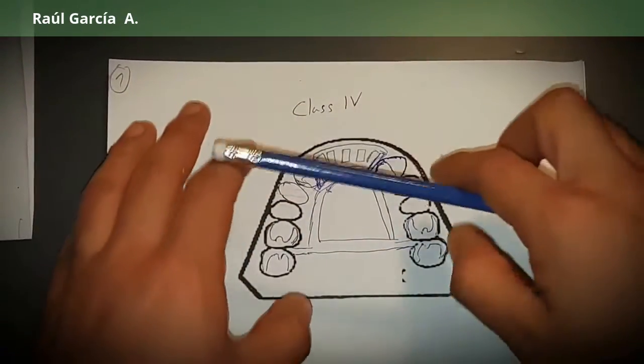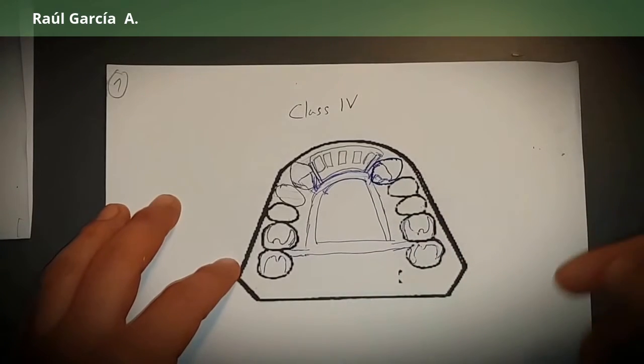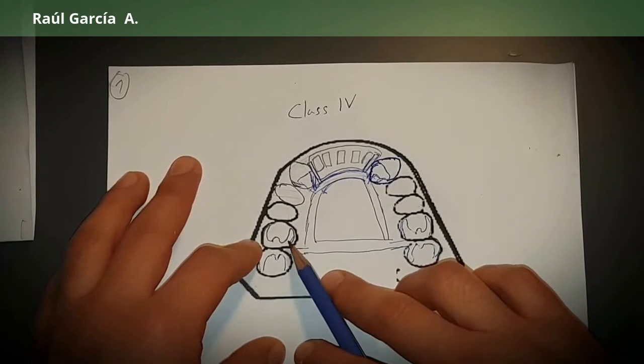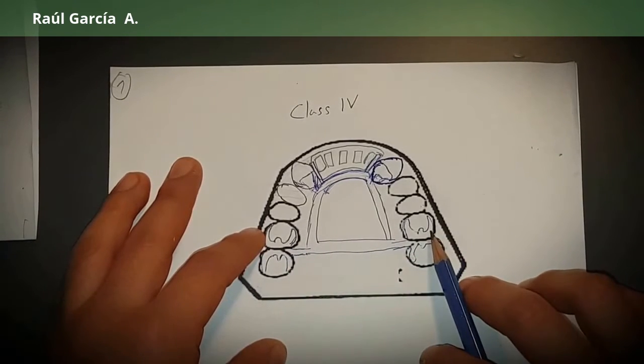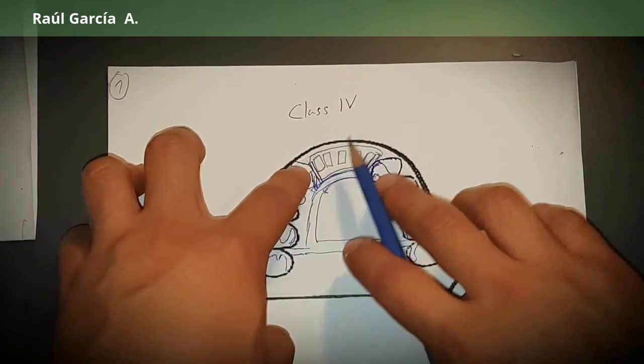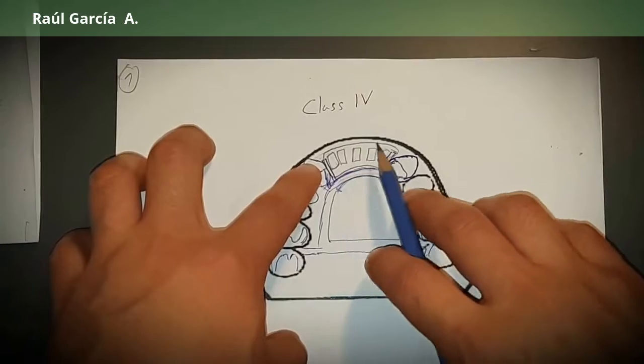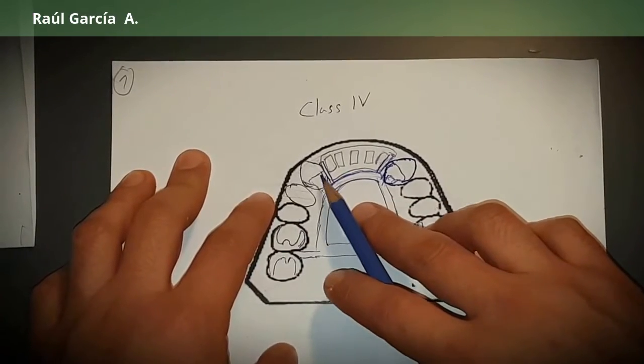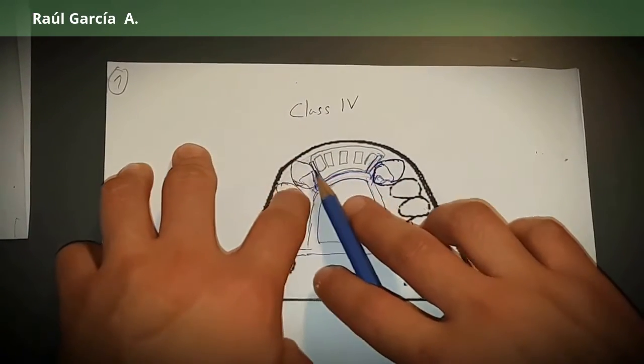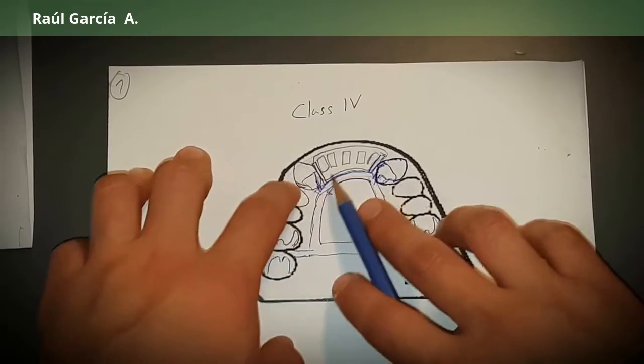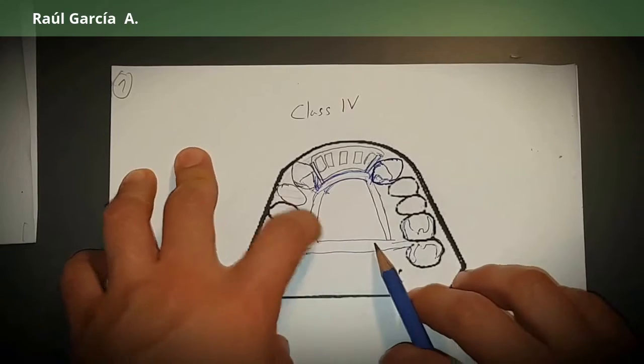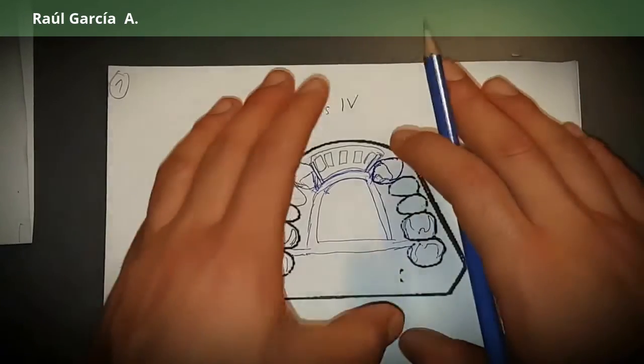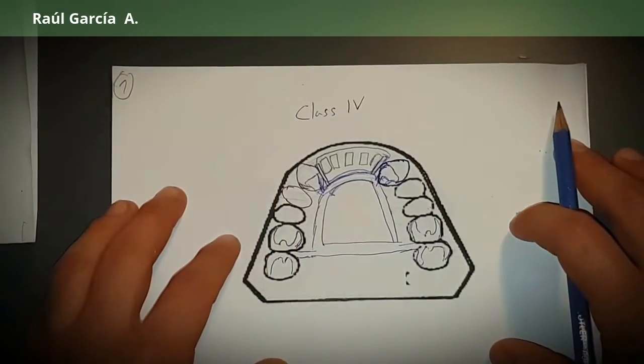Typically, the clasps that we use in this case is the maxilla, which is an embrasure clasp. We have, always remember, guiding planes next to the saddle area. So a guiding plane, guide plate. Then we put our rests on the canines. Minor connectors join the major connector. In this case, an anterior-posterior strap palatal strap. That's how it works as long as you keep your canines.